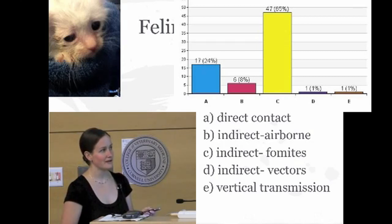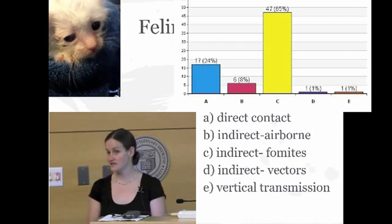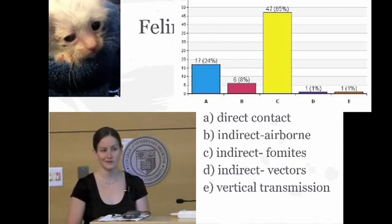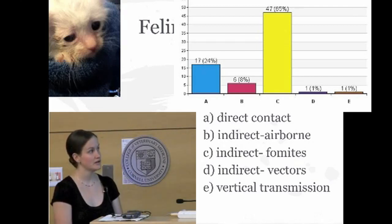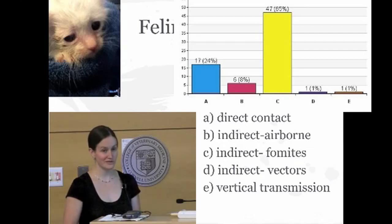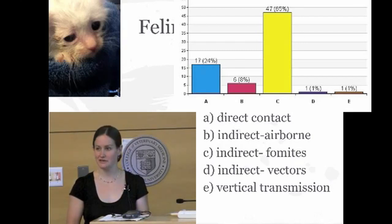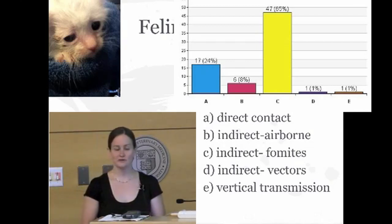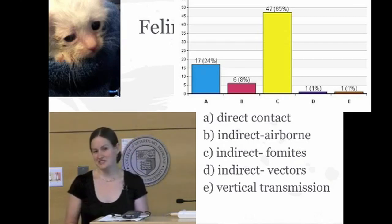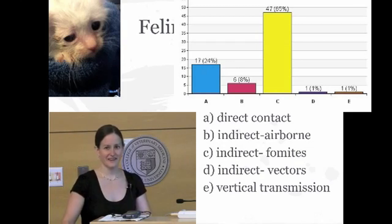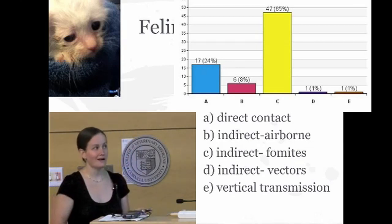One important additional note: feline panleukopenia can be transmitted vertically — in the womb from the mother to the babies, as well as at delivery or via lactation. Vertical transmission in utero does not cause the same clinical signs as horizontal transmission; instead it causes a neurological issue called cerebellar hypoplasia, producing a very wobbly kitten that shakes its head or wobbles when trying to do something.